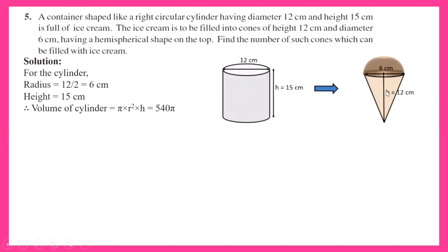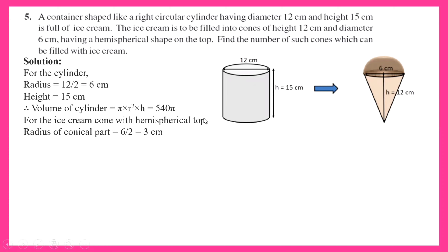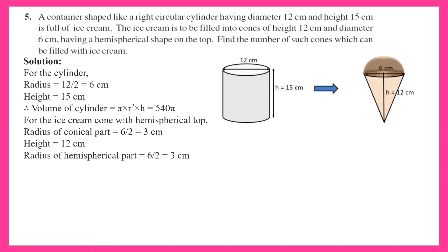Now for the cone with the hemispherical top: the diameter of the cone is 6, so the radius of the conical part is 6 upon 2, which is 3 centimeters. The height of the conical part is 12 centimeters. For the hemispherical portion, the radius is also equal to 3 centimeters.